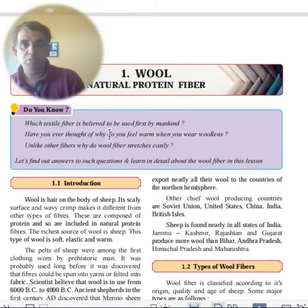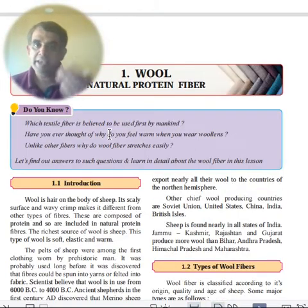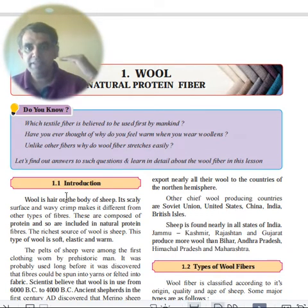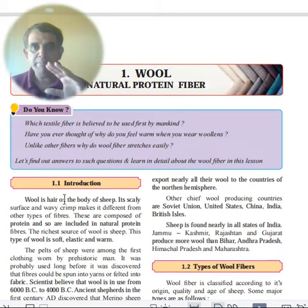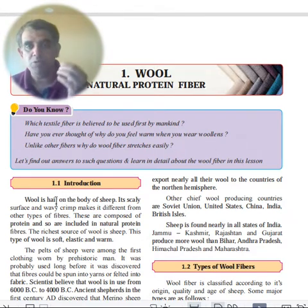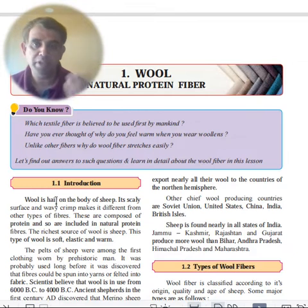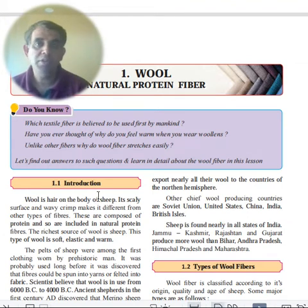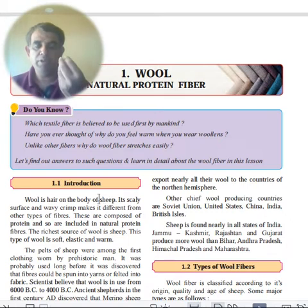Wool is the hair on the body of a sheep. Its scaly surface and wavy crimp make it different from other types of fibers. Wool is composed of protein — all hair is protein — so wool is a natural protein fiber, and the richest source is sheep.